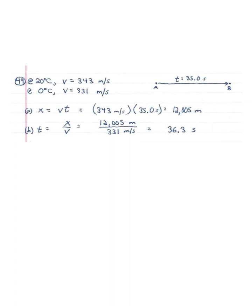Number 49 deals with the changing speed of sound through air at different temperatures. A sound wave takes 35 seconds to travel between two points in 20 degrees Celsius air. What is the distance between the points, and what would be the travel time at zero degrees Celsius? The speed of sound at 20 degrees Celsius is 343 meters per second; at zero degrees Celsius it's 331 meters per second. Distance equals speed times time: 343 meters per second times 35 seconds gives 12,005 meters. Then dividing 12,005 meters by the slower speed of 331 meters per second, the travel time would be 36.3 seconds.